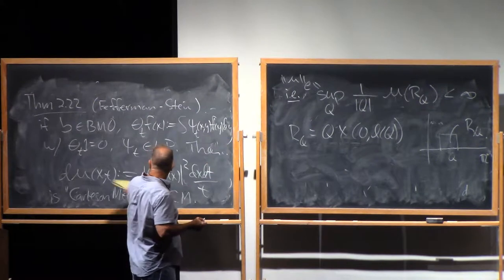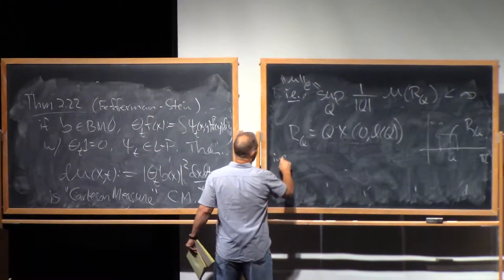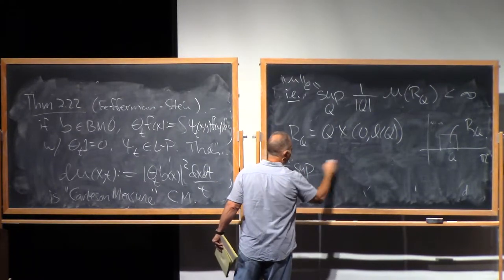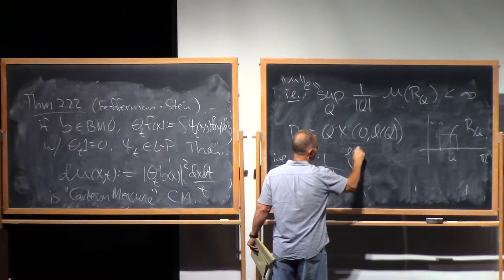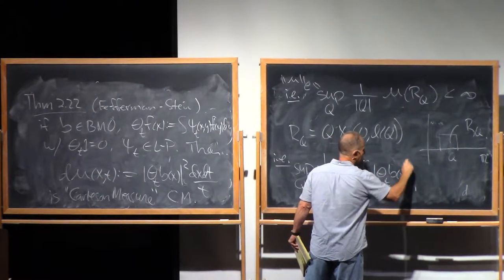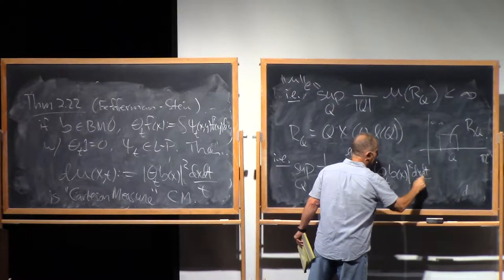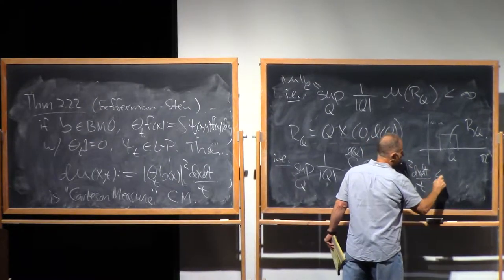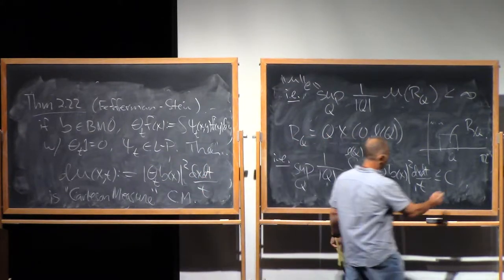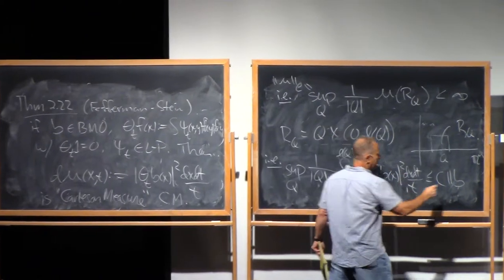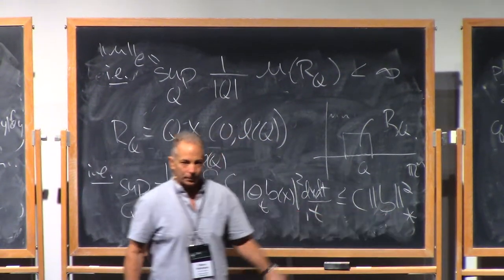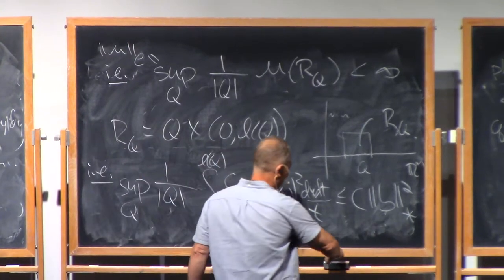We're in the upper half space. Here's a cube Q on the boundary. We extend it up into the upper half space to make an N plus one-dimensional cube. So this is R_Q. So in some sense, it's an N plus one-dimensional measure that scales like an N-dimensional measure. So in other words, for this particular measure, mu, this is saying, in this particular case, that the sup over all cubes Q, one over measure of Q, integral zero to length of Q, integral on Q, theta_T B of X squared, dx dt over T, is gonna be less than or equal to some constant depends on dimension and the Littlewood-Paley bounds for psi_T, times, of course, by the scaling here, it has to depend on this, the BMO norm squared.